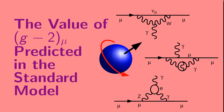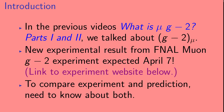Welcome to the video on the value of muon G-2 predicted in the standard model. In the previous videos — 'What is Muon G-2?' parts 1 and 2 — we talked about G-2 of the muon. Now there's a new experimental result from the Fermilab muon G-2 experiment that is expected to be announced in a seminar on April 7th.